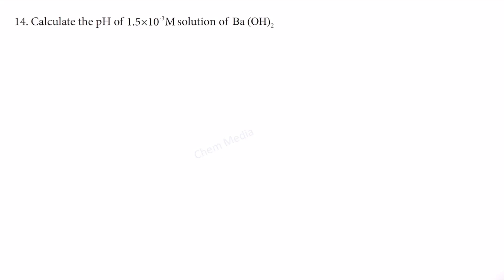Calculate the pH of 1.5×10^-3 molar solution of barium hydroxide. Barium hydroxide is a strong base and therefore it would dissociate completely as barium 2+ and OH-. To balance the equation we have to put 2 here. Now the equation is balanced.